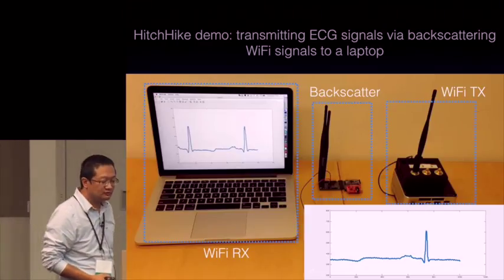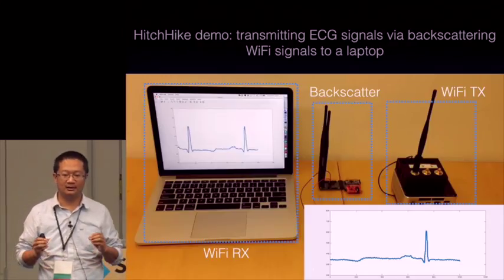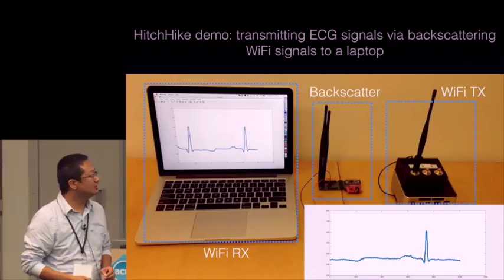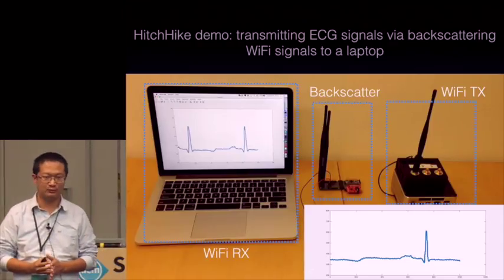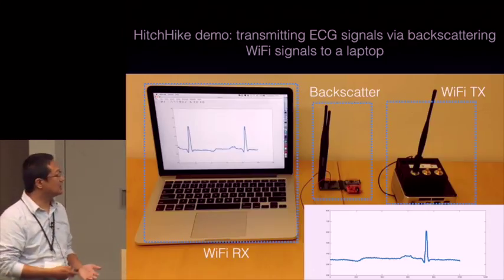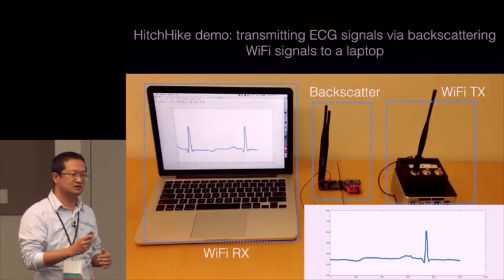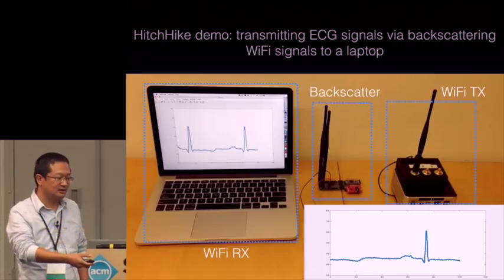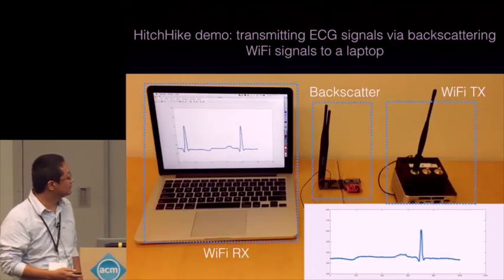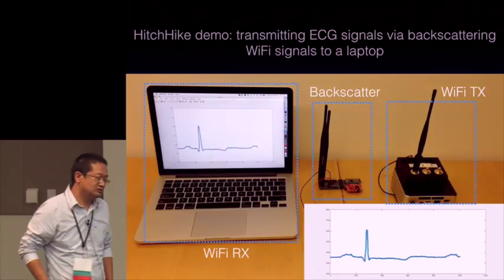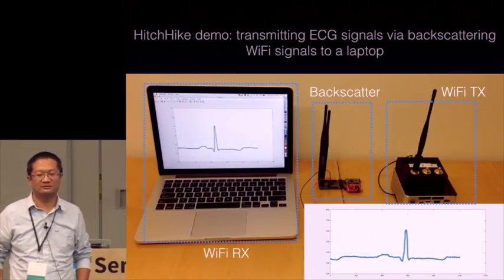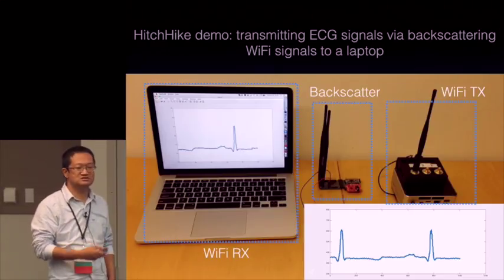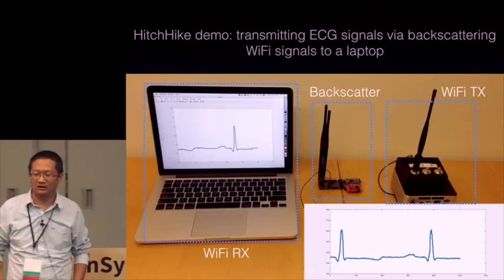We also show a demo — the first demo of a backscatter tag able to transfer ECG signals on top of Wi-Fi signals. We have an Intel 5300 Wi-Fi transmitter, a Wi-Fi receiver which is my laptop, and this backscatter tag is connected to an ECG sensor. The Wi-Fi receiver receives the Wi-Fi packets and extracts the ECG signal, displaying it in real time. We get very accurate signal from the ECG sensor at the laptop while backscattering only on the Wi-Fi signal. The source code and hardware for this demo is also available at the link I provided.